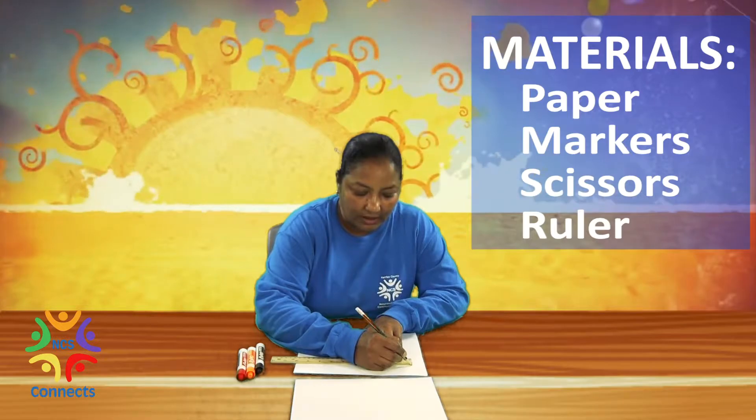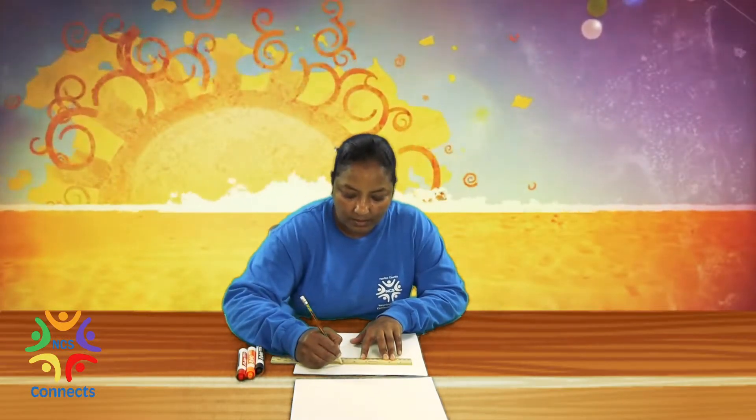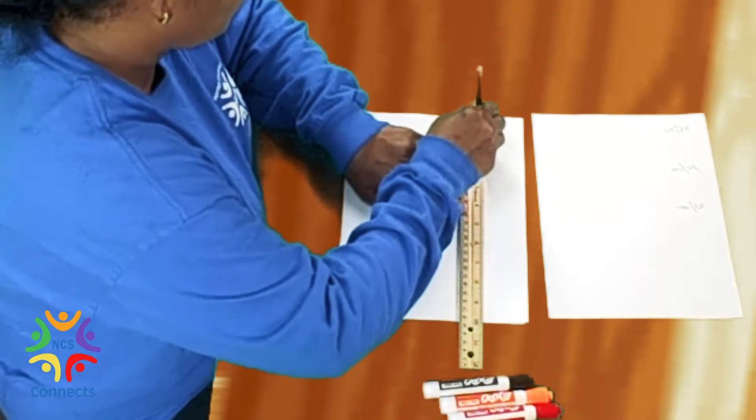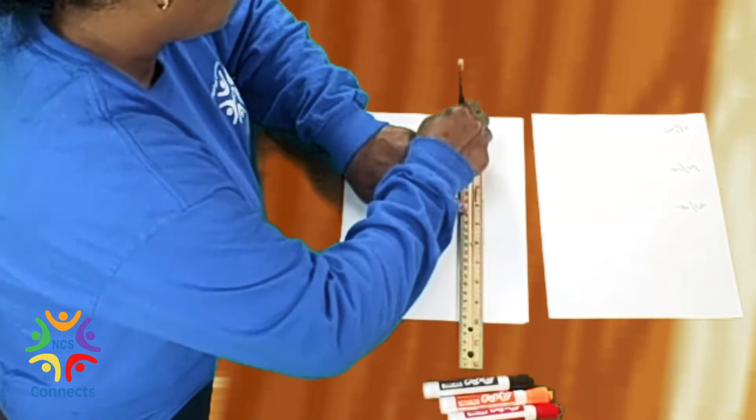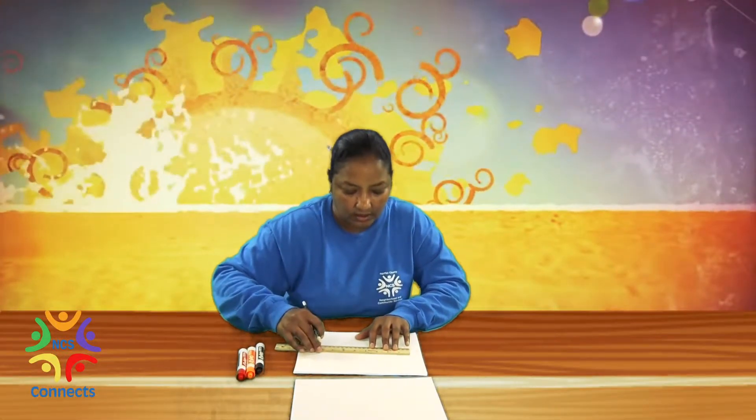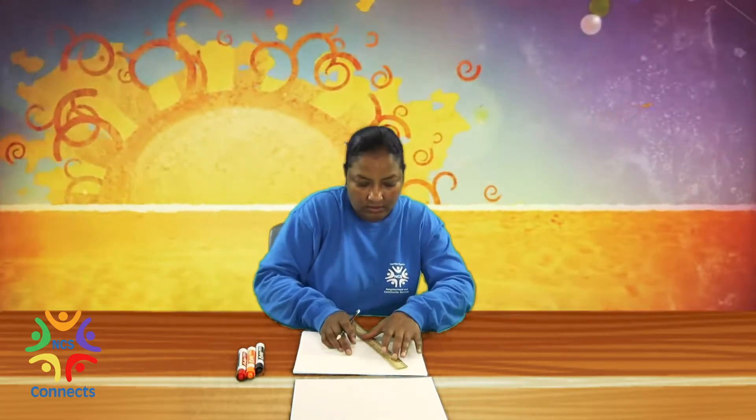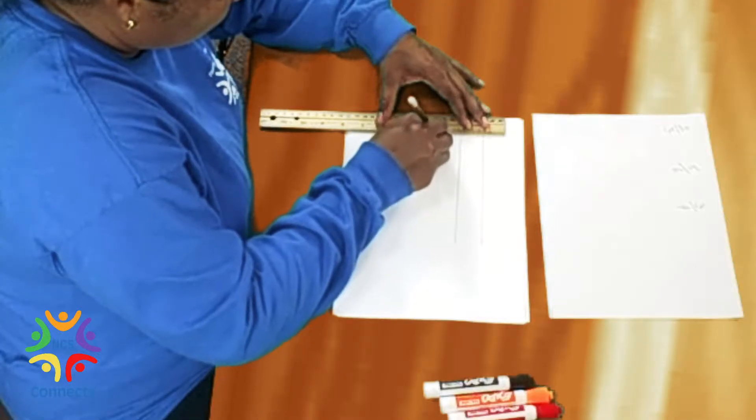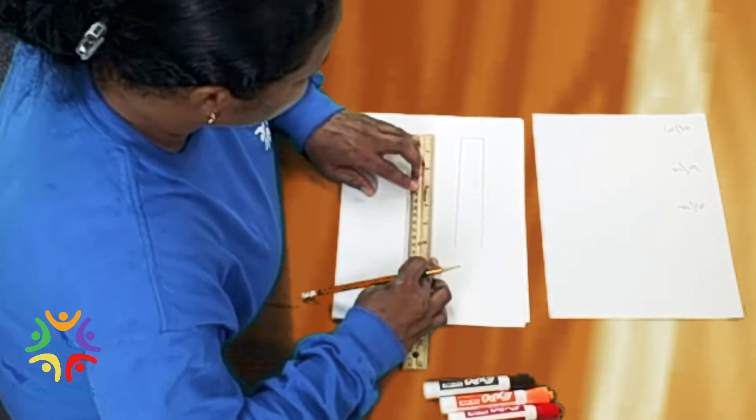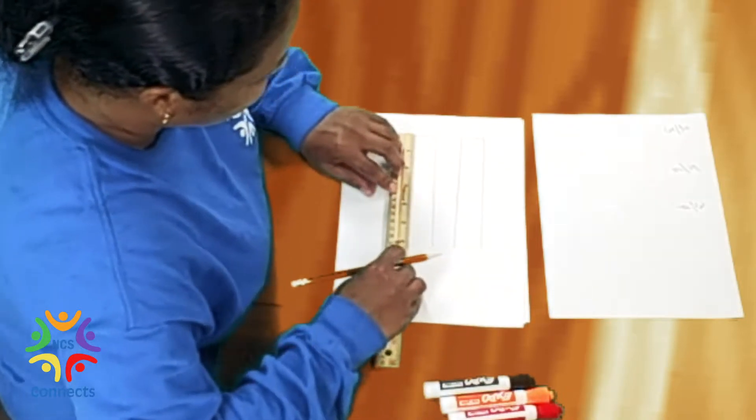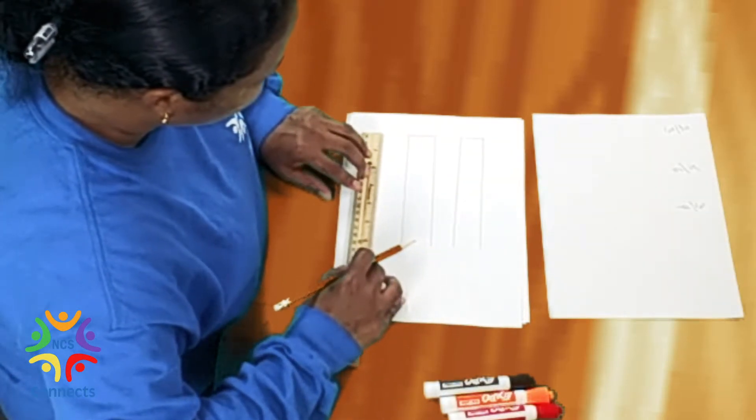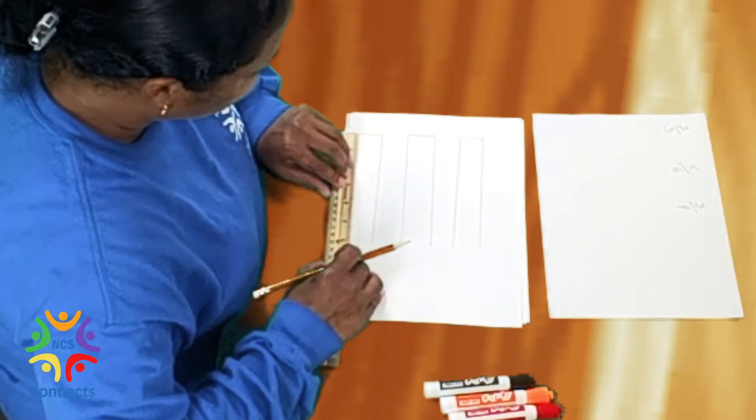We're gonna make six inch long lines. Move your ruler a little bit and go down. Then we're gonna go down here and make another six inches. Now we're gonna go down and make six inches in the bottom, six inches here, and six inches in the bottom.